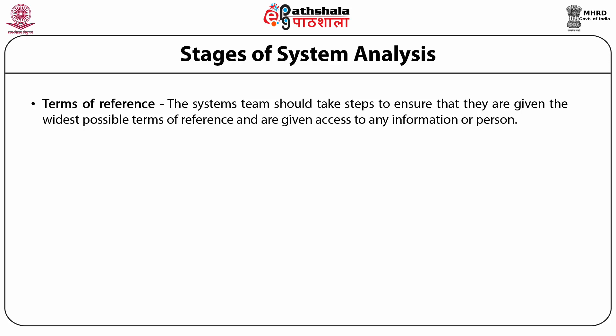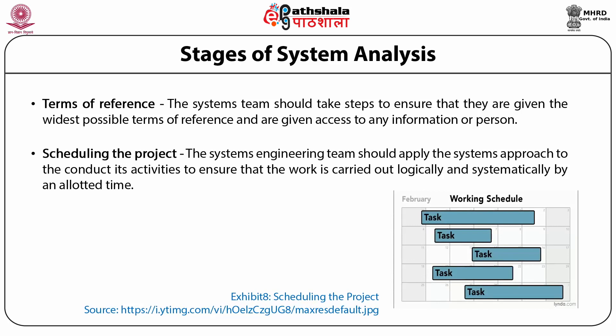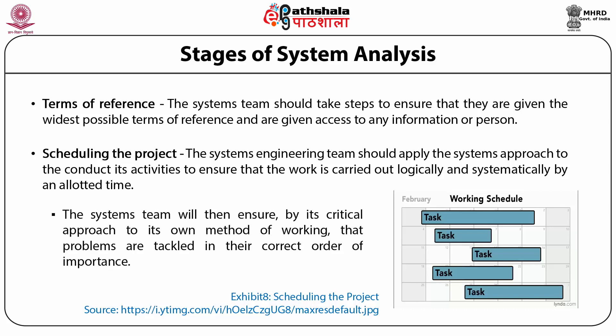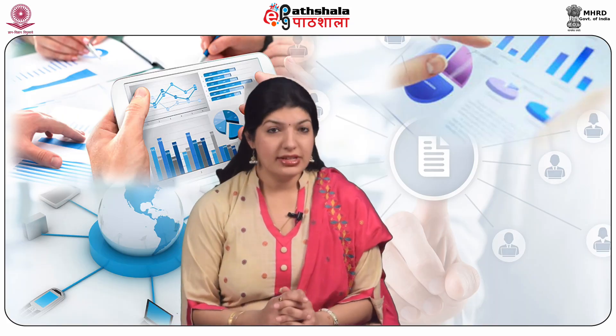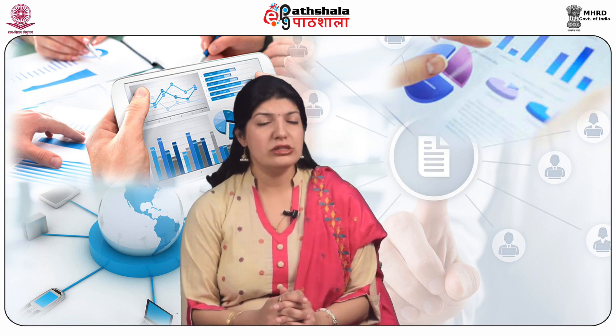The third step is scheduling the project. The system engineering team should apply the system approach to conduct its activities logically and systematically. A decision network should be constructed — for example, a critical path schedule — then targets should be set and duties allocated. The system team will ensure by its critical approach that problems are tackled in their correct order of importance.